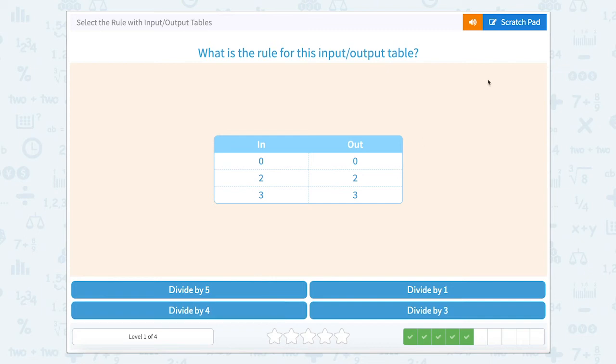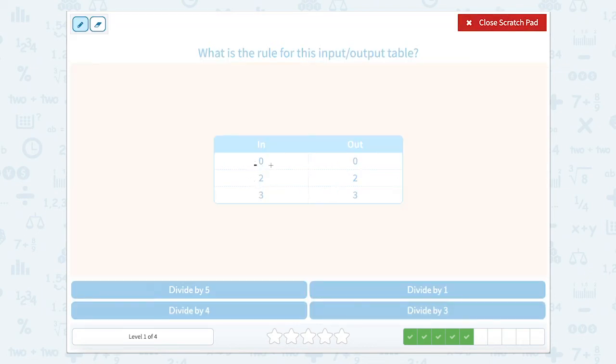We are getting very lucky with these problems today. If I look here, I have 0 and I'm going to 0, 2 to 2, and 3 to 3. So something is going to give me 2 to 2, 3 to 3. Well remember we said it's divide by 1.